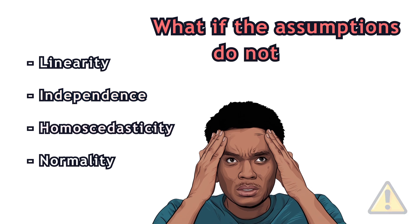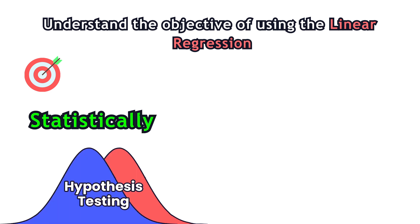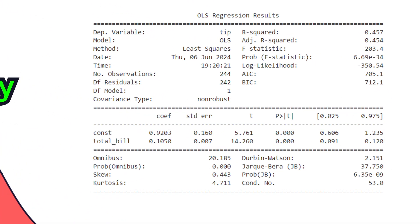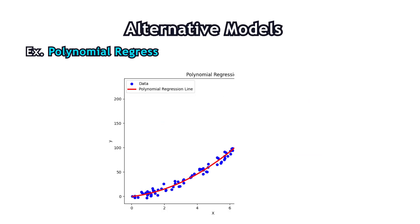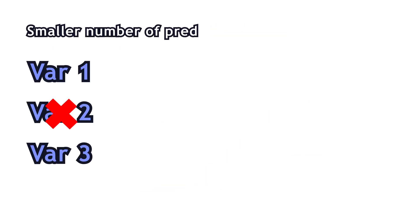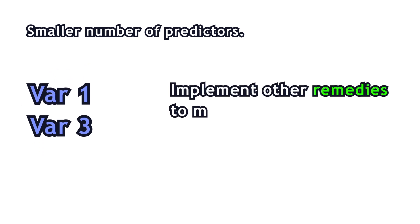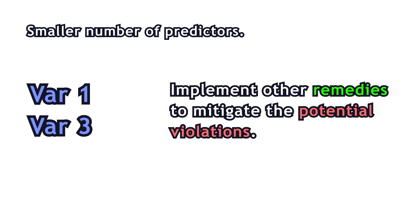What if the assumptions do not hold? Firstly, you need to understand your objective of using linear regression. If you want to approach the problem statistically, meaning you want to interpret the statistical properties of the model, then you can apply transformations to the variables, consider alternative models, use a smaller number of predictors, or implement other remedies to mitigate the potential violations.